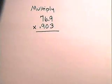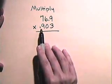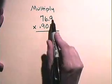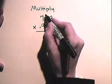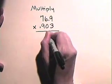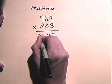Now let's look at an exercise involving multiplication of decimals and positioning the decimal point. Let's multiply 76.9 times 0.903. 3 times 9 is 27, carry the 2. 6 times 3 is 18, plus 2 is 20. 7 times 3 is 21, plus 2 is 23.